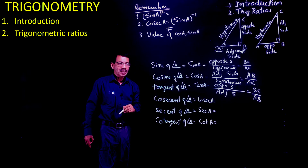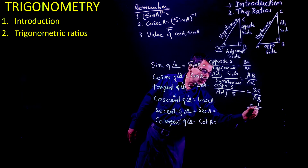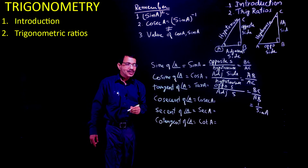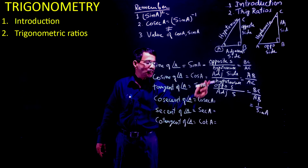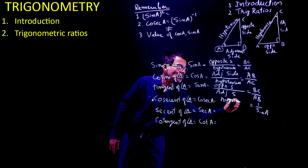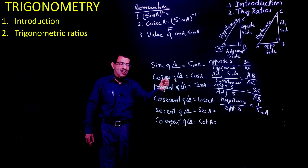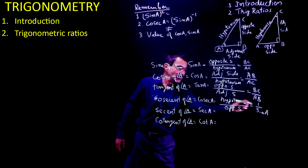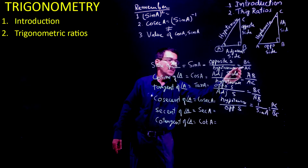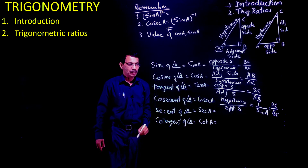Cosec A is 1 upon sin A. Since sin A is opposite divided by hypotenuse, cosec A is the other way — hypotenuse in the numerator divided by opposite side. That is equal to 1 upon sin A. So it is the inverse: AC upon BC, where AC was in the denominator and BC goes in the denominator.